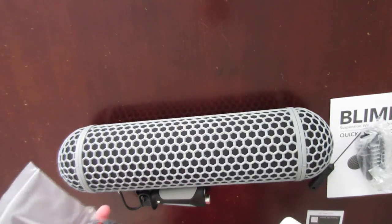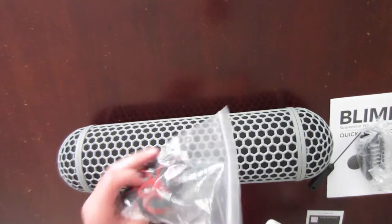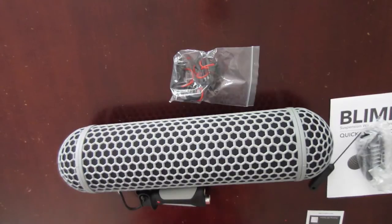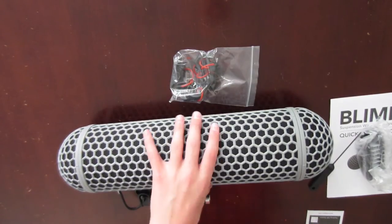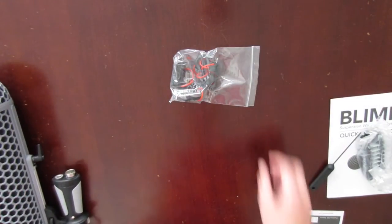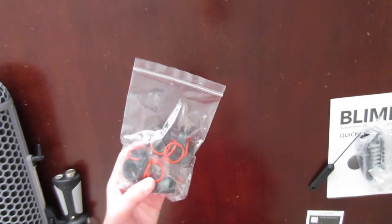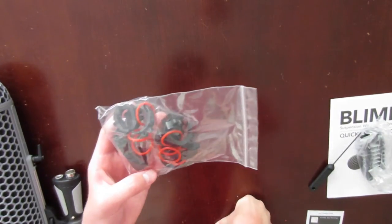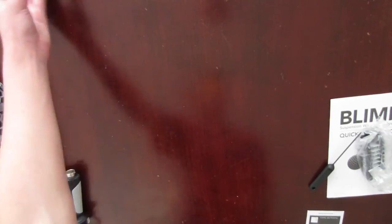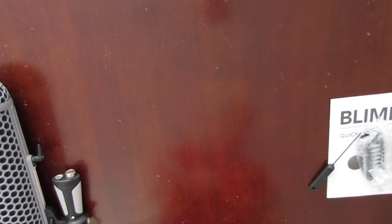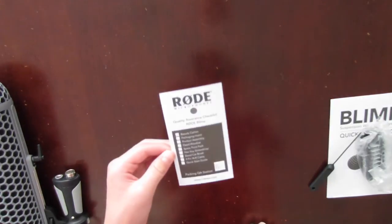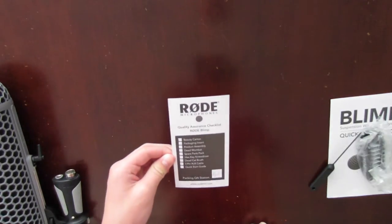The other side has the inside shock mount. This shows everything that comes with the Rode Blimp.